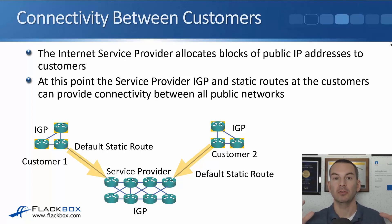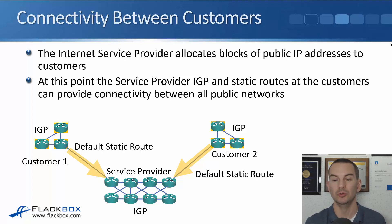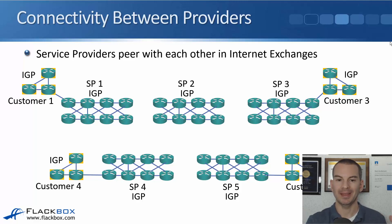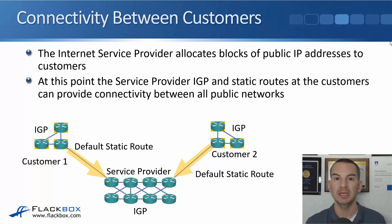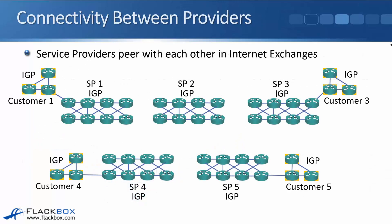At this point we have connectivity between all internal private networks and all of the public networks as well. We don't need BGP here — we could just be running IGPs at the customers and the service provider, and default static routes at the customer out to the internet, and everything would work just fine. But we don't obviously just have one internet service provider in the world. There are lots of internet service providers, and so that customers everywhere in the whole world can communicate with each other, the service providers need to have connectivity to each other.